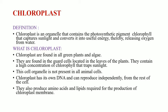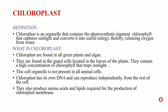Chloroplast is an organelle found in various green plants and also in algae. They are also found in the guard cells which are located in the leaves of the plants, and they contain a high concentration of chlorophyll that traps solar energy. This cell organelle is not present in all animal cells.